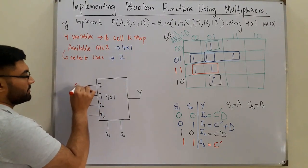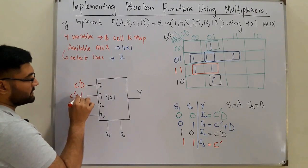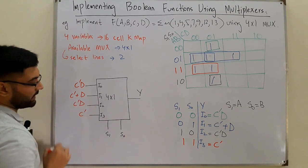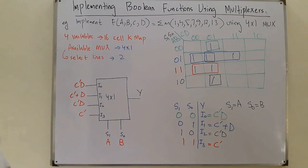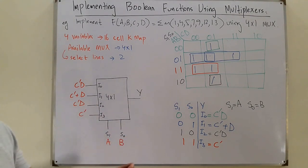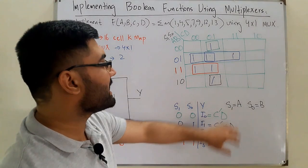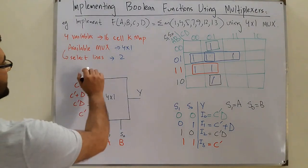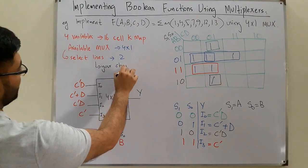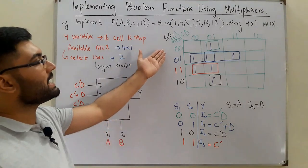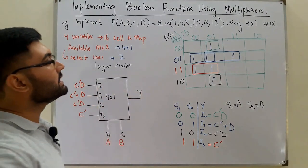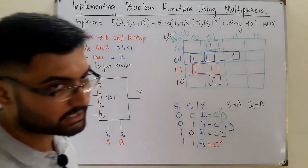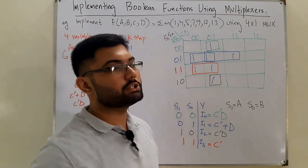Placing these into the 4x1 multiplexer: I0 = C'D, I1 = C' + D, I2 = C'D, I3 = C', with S1 = A and S0 = B. This is the implementation of the boolean function using only a single 4x1 multiplexer. The select lines can vary based on your choice — we'll explore different select line assignments in the next video. See you soon, insha'Allah — take care, goodbye.